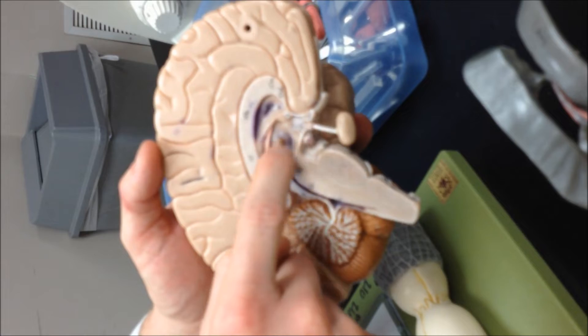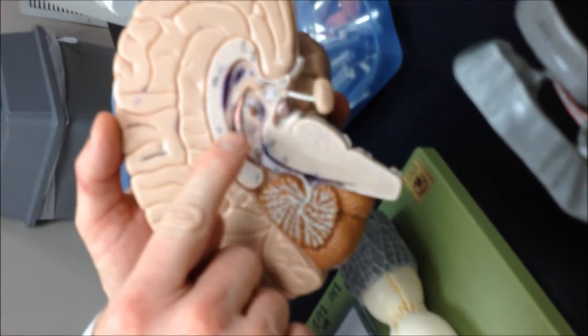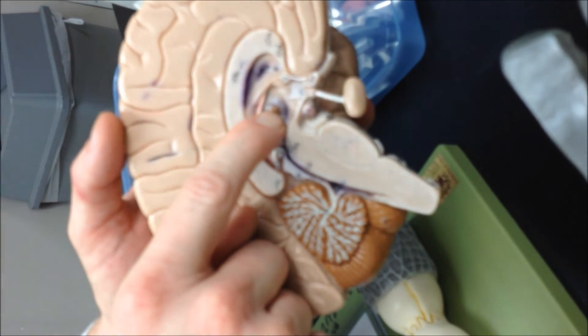All right. And moving down, now we're going to be at the thalamus, the structure here. And then the little spot in the middle there is the intermediate mass of the thalamus.